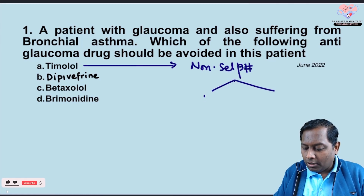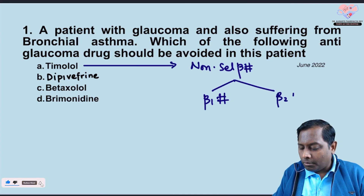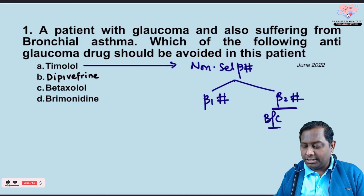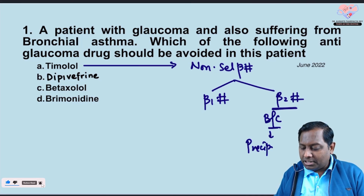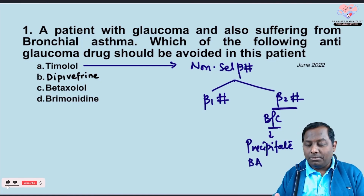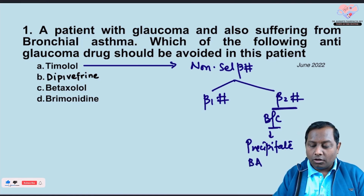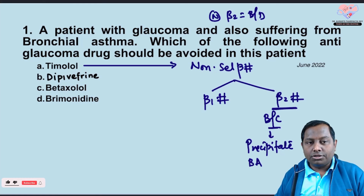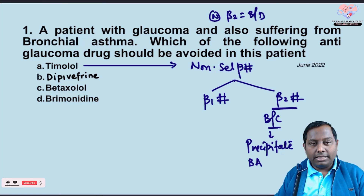This non-selective beta blocker will block both beta-1 and beta-2 receptors. Because of the beta-2 blockade, there are high chances of bronchoconstriction, which can cause precipitation of bronchial asthma. Normally, beta-2 receptors cause bronchodilation, so when you block them, bronchoconstriction results.